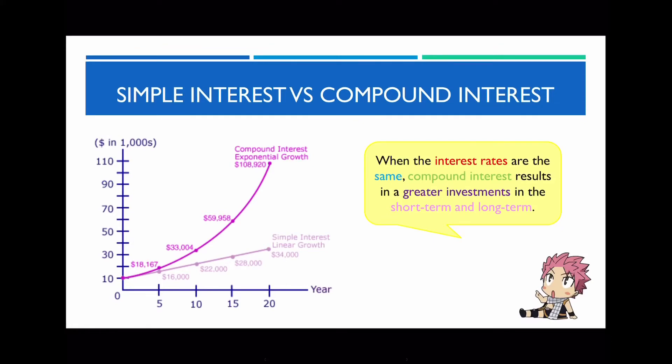Here I have two graphs — one showing simple interest and one showing compound interest. With compound interest you get exponential growth, whereas with simple interest you get a straight line, which is linear growth. This diagram shows what an investment looks like starting with the same amount — $10,000 — at the exact same interest rate. We can clearly see that compound interest results in a greater amount in both the short term and the long term.